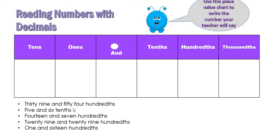Let's read together. The first one: 39 — this is the whole number, and this is the decimal point — fifty and 44 hundredths. This is the last place value we will stop at.